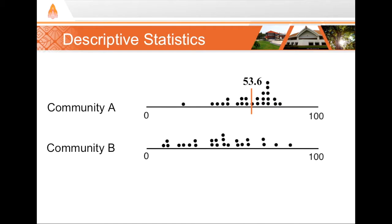If we do the same thing for our sample from Community B, we find that the mean age of the sample from Community B is 44.2 years. So comparing the means of our two data sets, we can see that our sample from Community A is older than that from Community B.